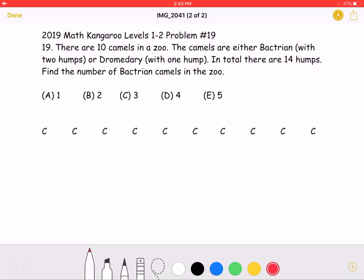To start, the problem states that we have a total of 10 camels, and the camels either have two humps or they have one hump, and in total there are 14 humps.